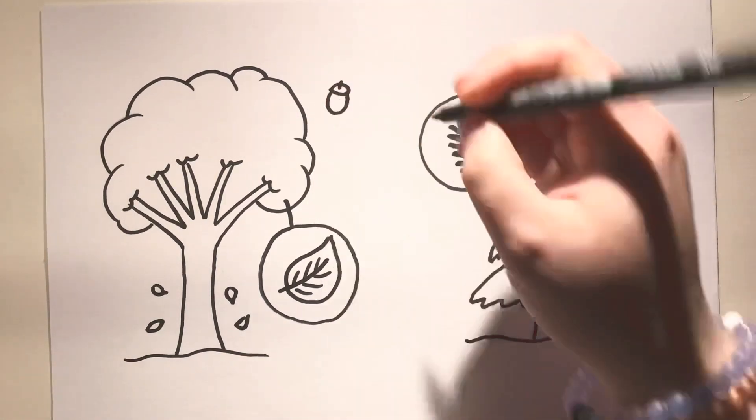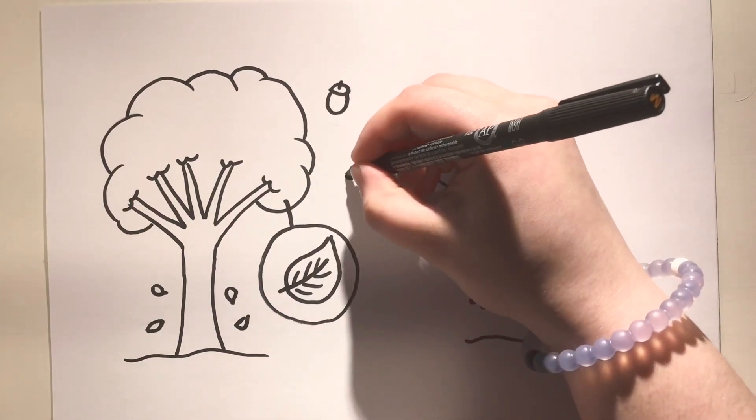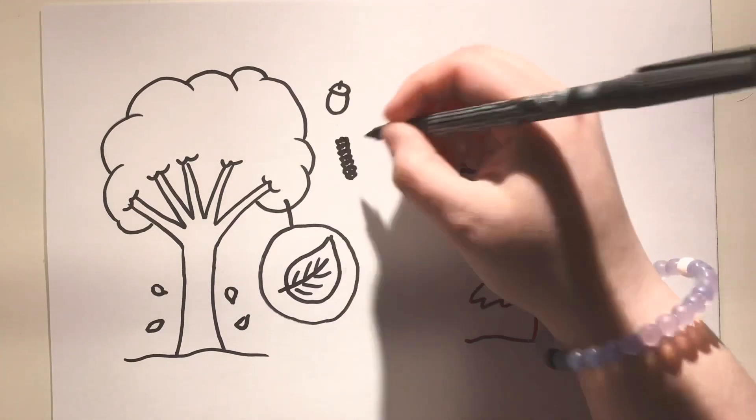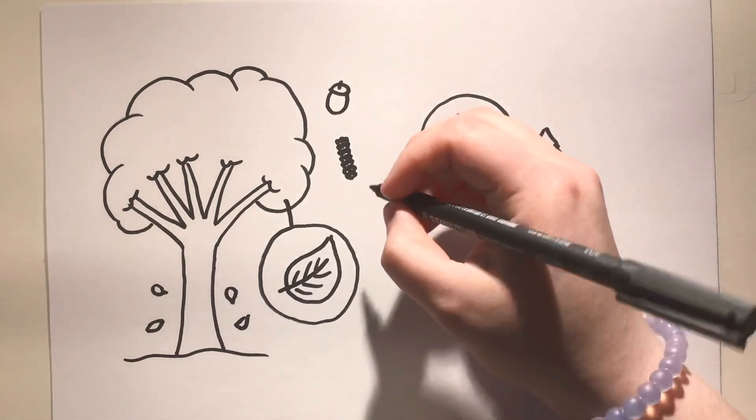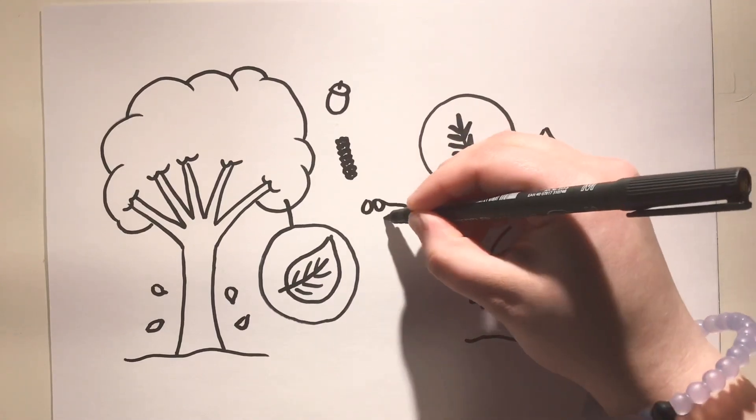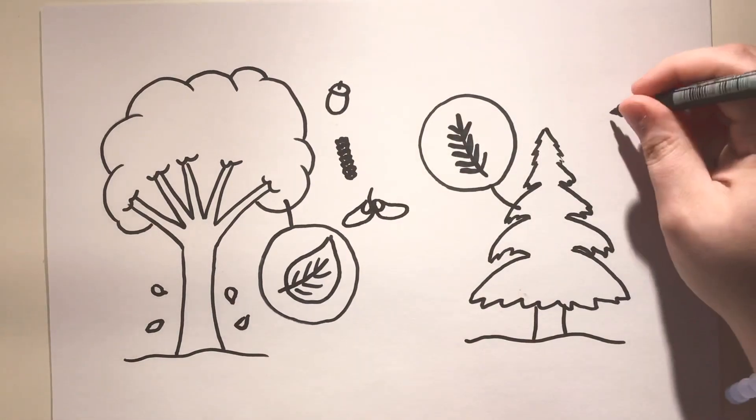Deciduous trees have very different kinds of seeds. That one is from an oak tree and it's called an acorn. Birch trees have these string-like seeds that are stuck together. And then maples, the ones that we get maple syrup from, have ones that look like mustaches.